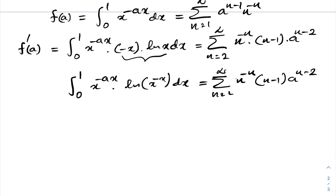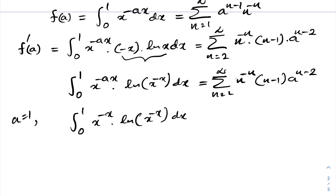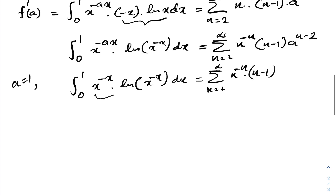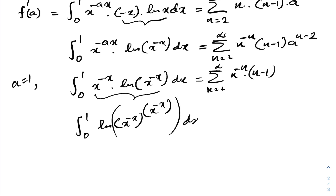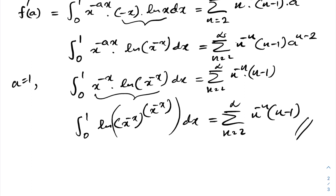Substituting a equals 1, we have the integral from 0 to 1 of x to the minus x times natural log of x to the minus x dx, equal to the sum from n equals 2 to infinity of n to the minus n times n minus 1. This can be written as the integral from 0 to 1 of natural log of x to the minus x raised to the x to the minus x dx, equaling the sum from n equals 2 to infinity of n to the minus n times n minus 1. This is the answer. If you like this type of video, please subscribe to the channel. Thank you for watching.